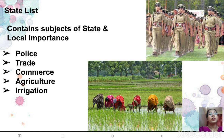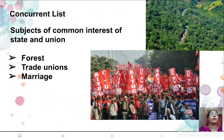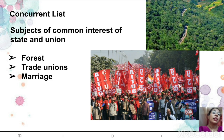There are many subjects that cannot come under the union or the state lists — these come under the concurrent list. These subjects are of common interest to both state and union, like forest, which has both national and state importance. Trade unions also come under the concurrent list. A trade union is an association of employees, employers, or individual workers. The subject of marriage also comes under the concurrent list.